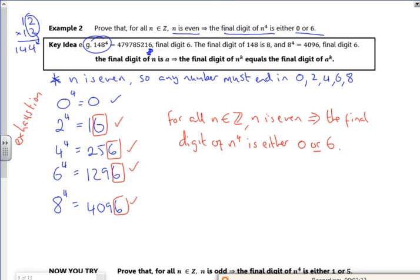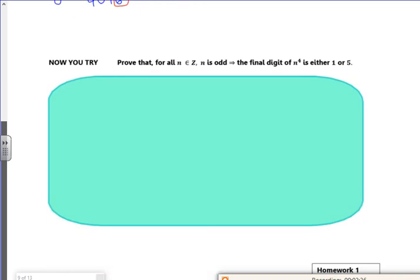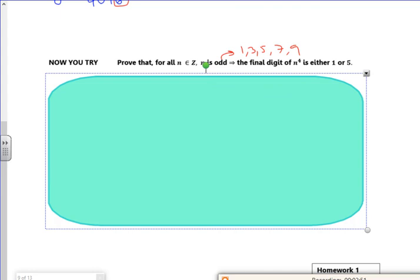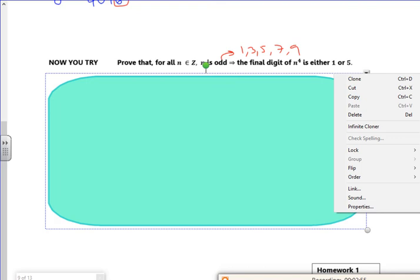One for you to have a go at. So this time we're going with odds. So same idea. Think about your odd numbers. So you've got one, three, five, seven, nine. Raise them all to the power four and see what you get out. Maybe pause it and do this question. No blanks in your pack.